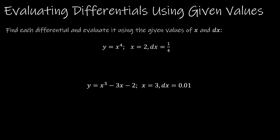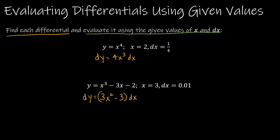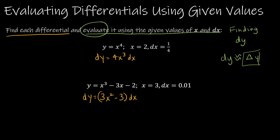Now we want to evaluate differentials using given values. On the last step we found the differential: for the first, dy equals 4x cubed dx, and for the second, dy equals (3x squared minus 3) dx. When we evaluate a differential, we're finding dy, and dy is going to approximate delta y. That's the goal — we're trying to approximate delta y, which is the actual change in y on the actual graph.